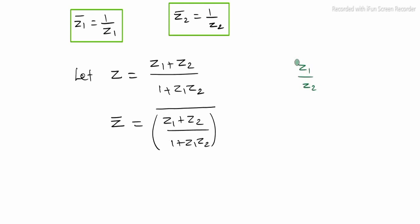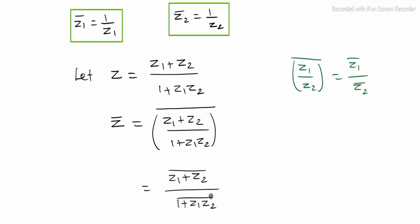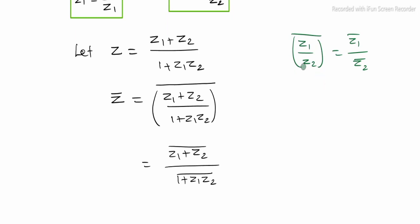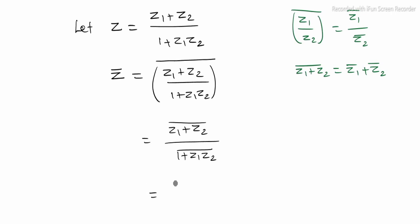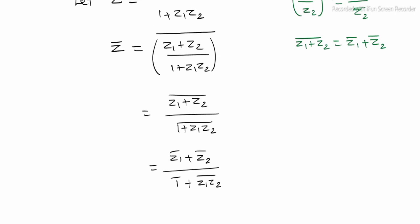We know the property that the conjugate of a sum can be distributed: z1 plus z2 whole bar can be written as z1 bar plus z2 bar. So we get z1 bar plus z2 bar divided by 1 plus z1 into z2 whole bar. Also, z1 into z2 whole bar can be written as z1 bar into z2 bar.